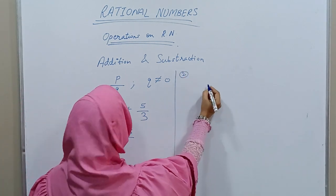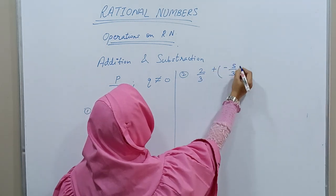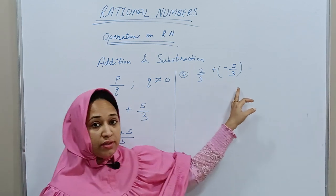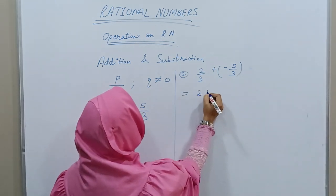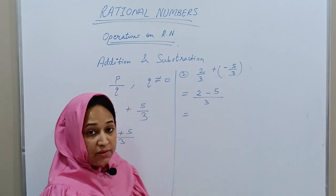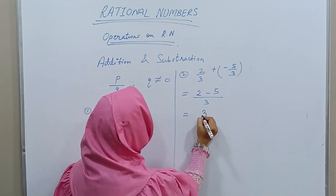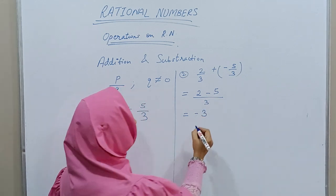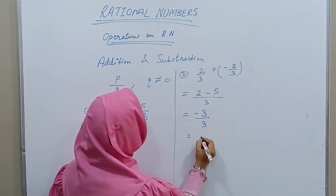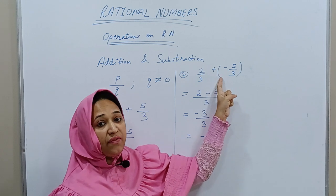Now let's take another example: 2/3 + (-5/3). The denominators are the same. Applying integer rules, plus and minus gives minus, so we get 2 - 5. The signs are different, so we subtract: 5 - 2 = 3, and the sign of the greater number is minus, giving us -3/3. Simplifying, the answer is -1.